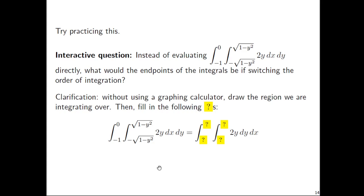I'd like you to practice this. Instead of evaluating directly the integral from -1 to 0 for y and from -√(1 - y²) to +√(1 - y²) for x of the function 2y, what would the endpoints of the integrals be if you switch the order of integration? Without using a graphing calculator, draw a quick sketch of the region we're integrating over, then fill in the question marks: if you're going to have a dy dx integral instead of dx dy, what would those limits have to be?